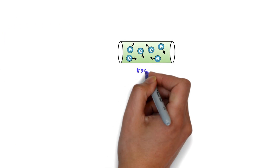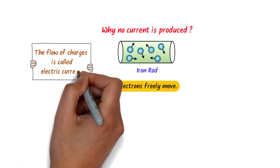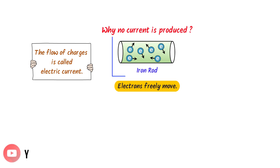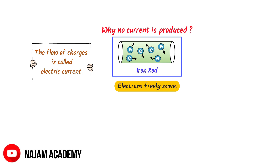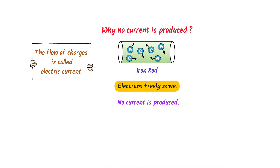Consider a metal like an iron rod. We know that electrons freely move in this metal rod. Now here is one important question: why is there no current produced in this rod? According to this definition, the flow of charges is called electric current. Electrons are also freely moving in this rod, but in reality, no current is produced here. So as a whole, this definition is not the correct definition. That's why I had to revise it.